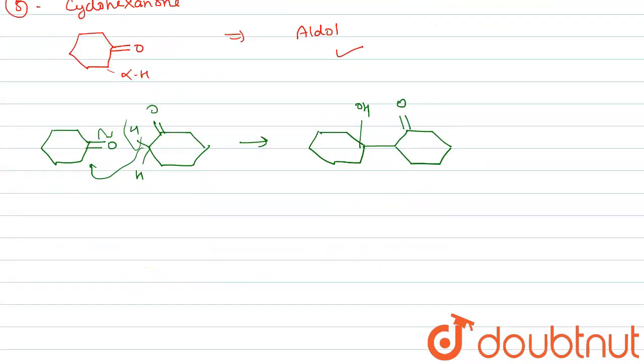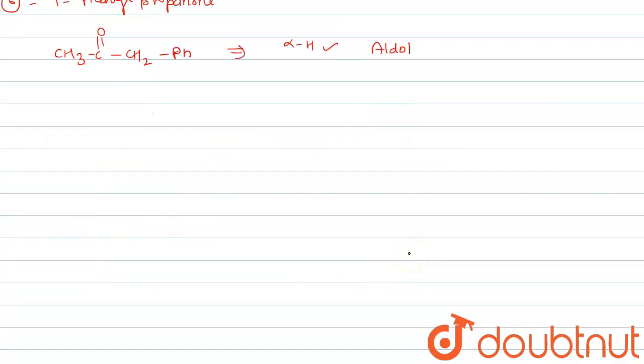Next one is 1-phenyl propanal. Alpha hydrogen is present, so aldol reaction takes place.